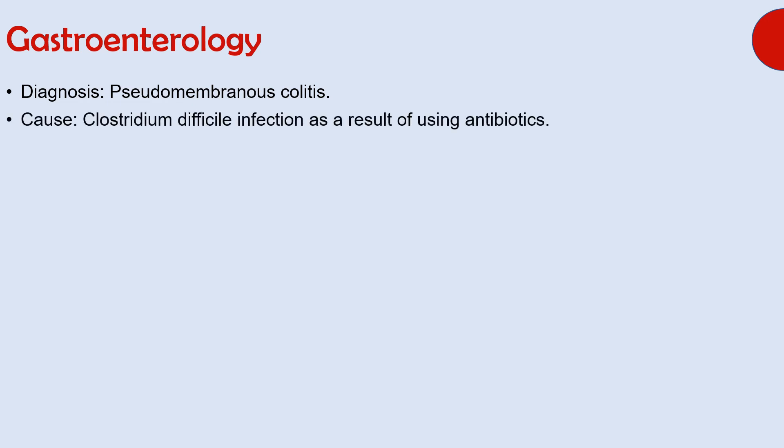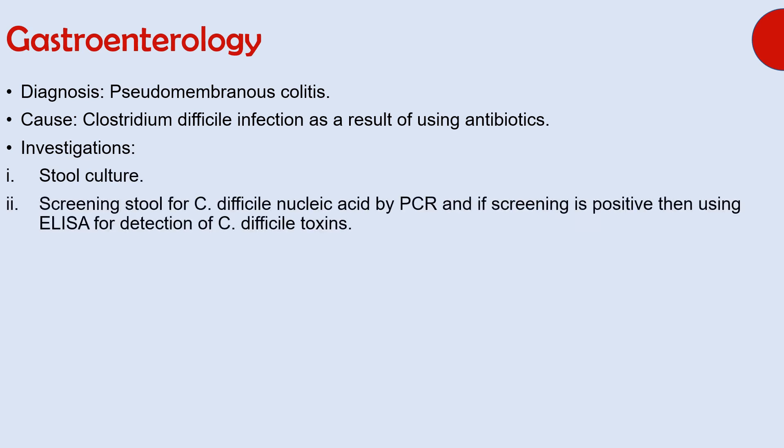The cause of this diarrhea is Clostridium difficile infection as a result of using antibiotics. Investigations to diagnose this condition include stool culture, screening stool for Clostridium difficile nucleic acid by PCR, and if screening is positive, using ELISA for detection of Clostridium difficile toxins. The diagnosis of pseudomembranous colitis rests upon detection of Clostridium difficile toxins in stool. Abdominal and erect chest X-ray are also performed.